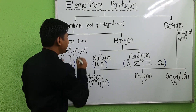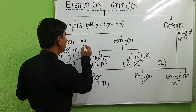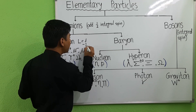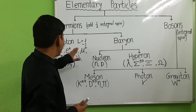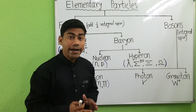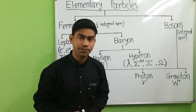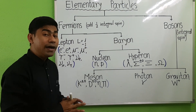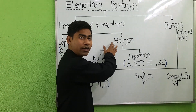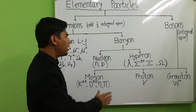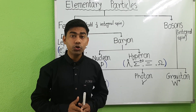A lepton number L equals to 1 is assigned to the lepton, and L equals to minus 1 for the anti-lepton.